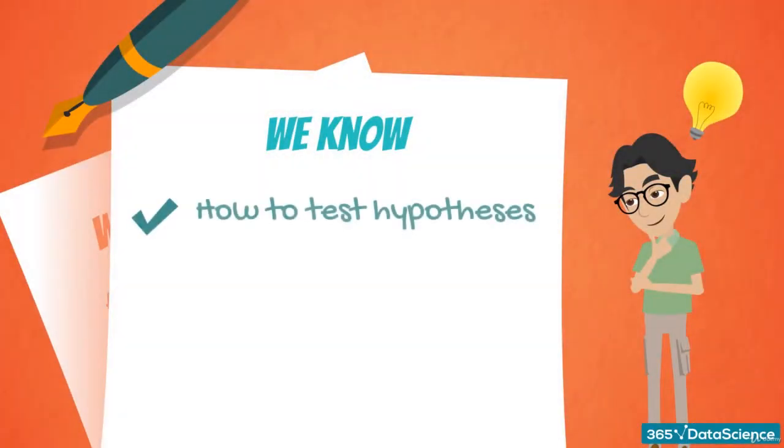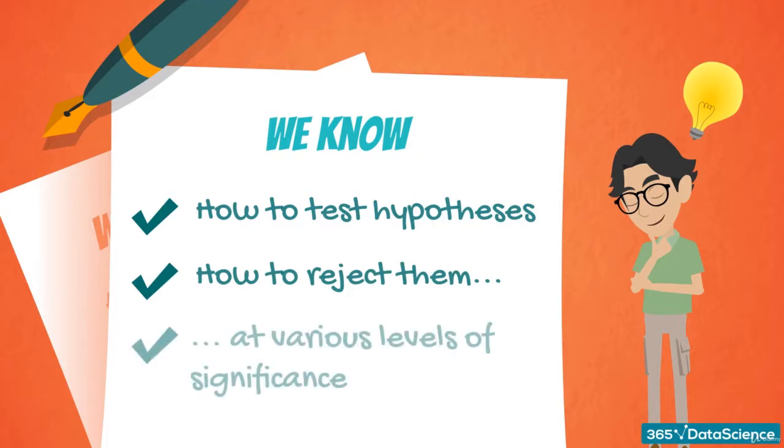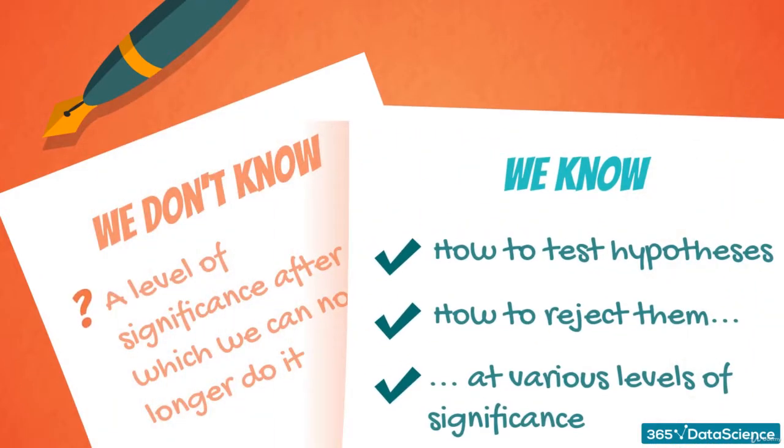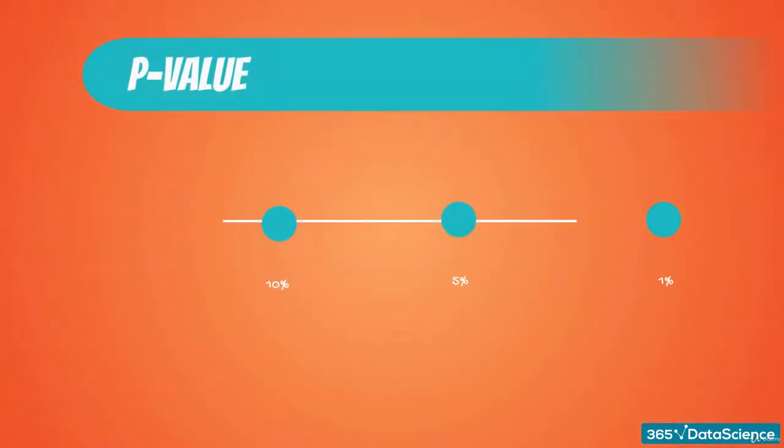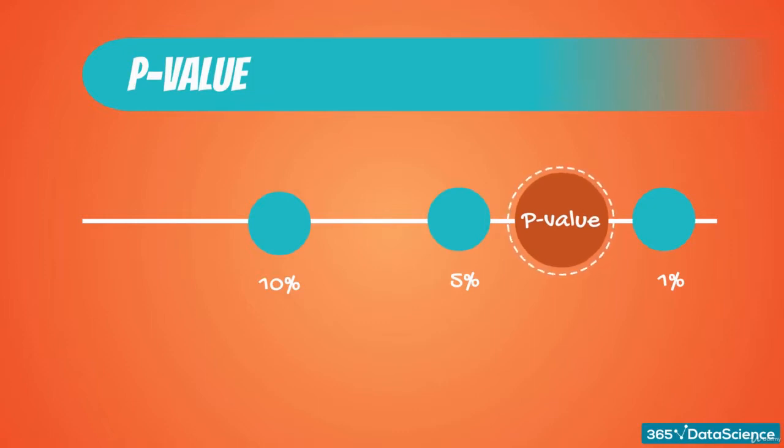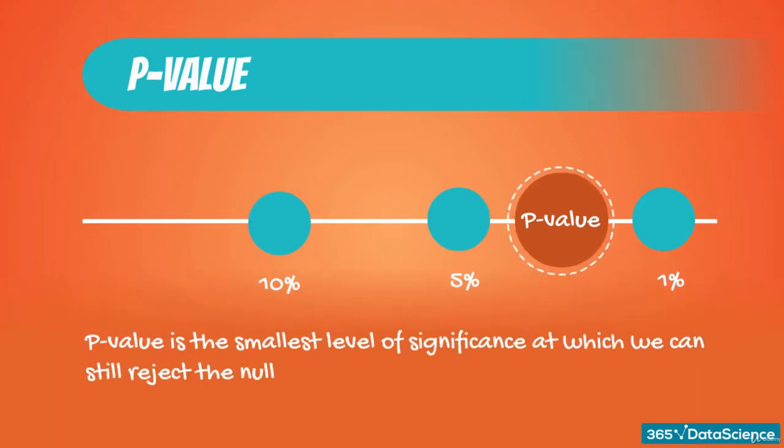Now we know how to test hypotheses and how to reject them. We rejected a null hypothesis at various levels of significance, but we couldn't find a level of significance for which we can no longer do it. This is the right moment to introduce a measure called the p-value. This is the most common way to test hypotheses. Instead of testing at pre-assigned levels of significance, we can find the smallest level of significance at which we can still reject the null hypothesis, given the observed sample statistic.